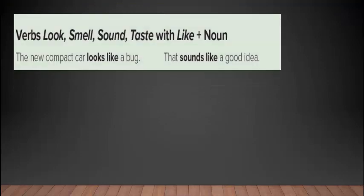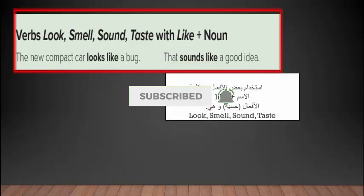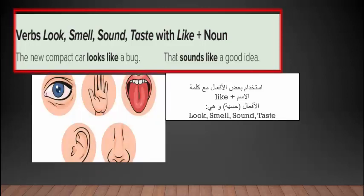Verbs look, smell, sound, taste with like plus noun — استخدام الأفعال الحسية وهي النظر والشم والاستماع والتذوق مع like زائد الاسم. تستخدم هذه الأفعال الحسية بهذه الطريقة: like زائد الاسم. كما نرى في المثال: The new compact car looks like a bug / That sounds like a good idea. هذه الأفعال خاصة بالحواس.